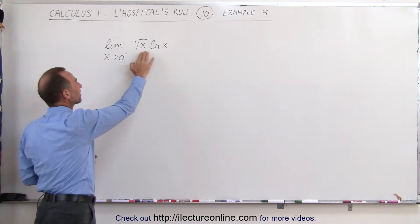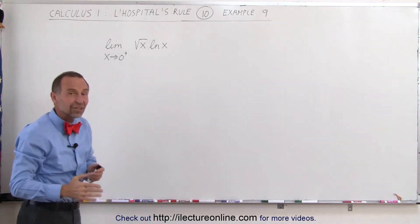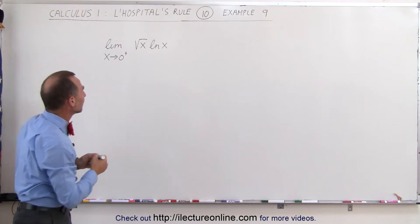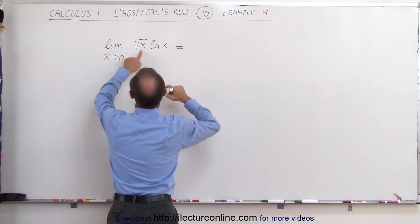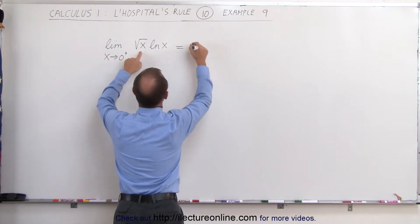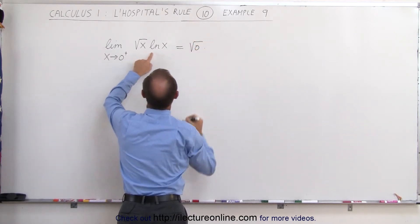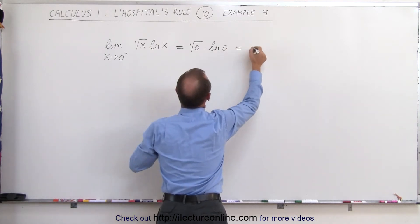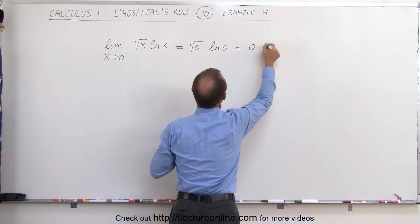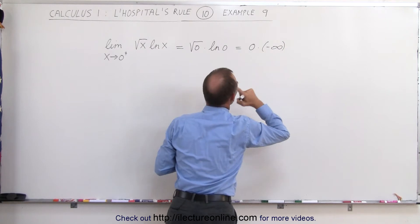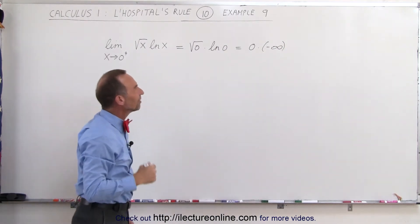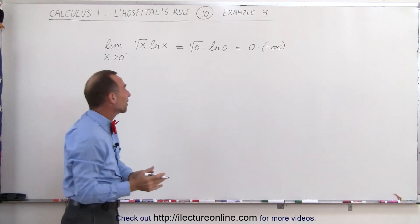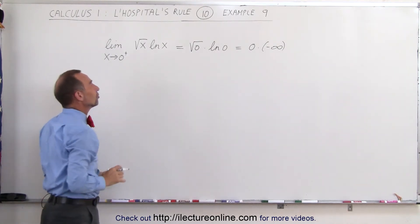We have the square root of x times the natural log of x, and it's not even a fraction. Let's go ahead and plug in some numbers and see what we get. This becomes the square root of 0 times the natural log of 0. This becomes 0 times negative infinity, so we don't get 0 divided by 0 or infinity over infinity. It does appear as if L'Hopital's rule cannot be used here.